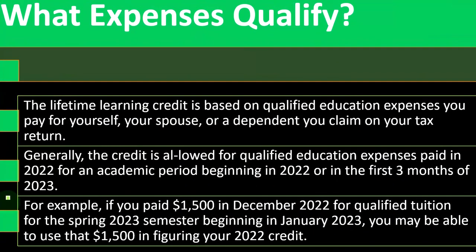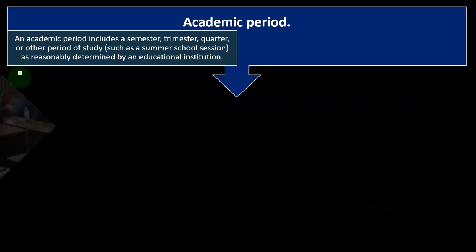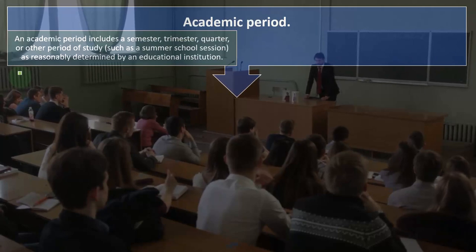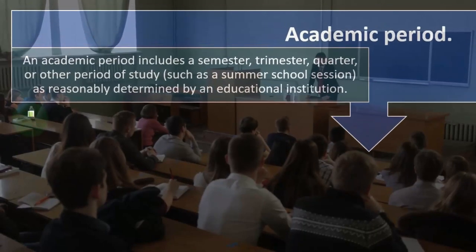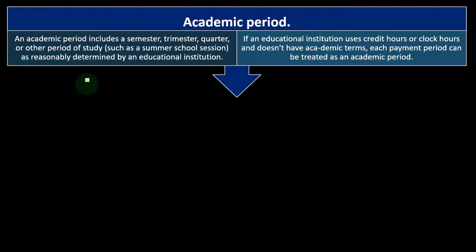For example, if you paid $1,500 in December 2022 for qualified tuition for the spring 2023 semester beginning in January 2023, you may be able to use the $1,500 in figuring your 2022 credit. An academic period includes a semester, trimester, quarter, or other period of study such as a summer school session, as reasonably determined by the educational institution. If an educational institution uses credit hours or clock hours and doesn't have academic terms, each payment period can be treated as an academic period.